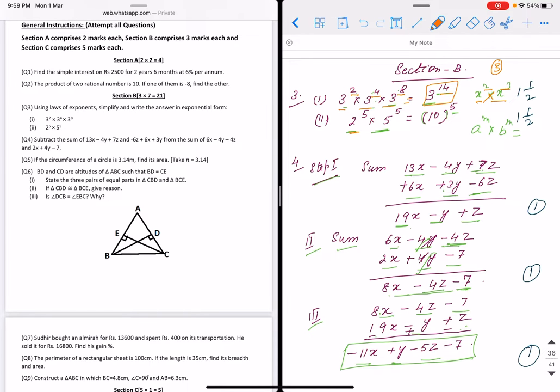Next question: 2⁵ × 5⁵. We multiply the numbers to get 10⁵. We know that aᵐ × bᵐ will be (ab)ᵐ.